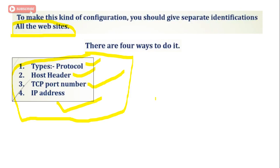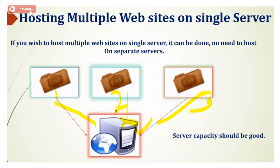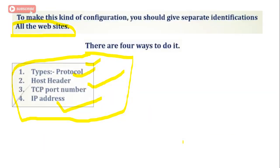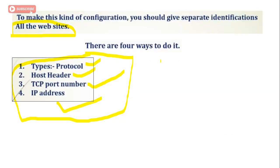Everything will be separate from each other. These are the basic things we have to remember to make this a successful configuration. The basic requirement is server capacity — if your server capacity is good, we can easily achieve this by using all four ways of identification for all the websites.